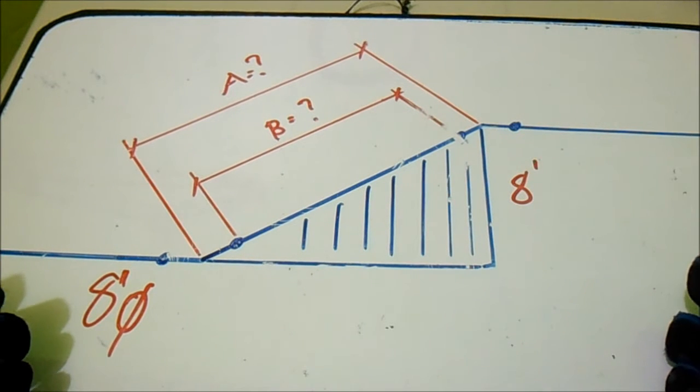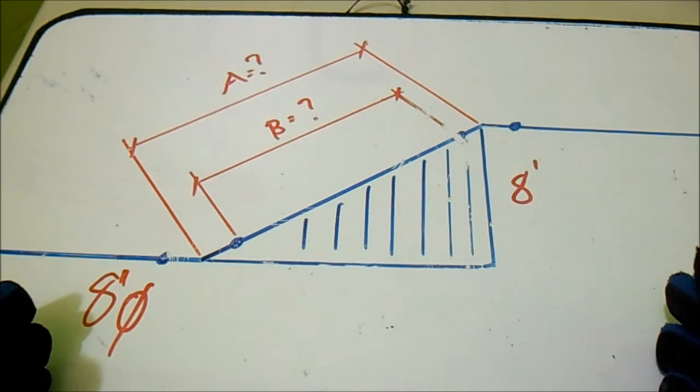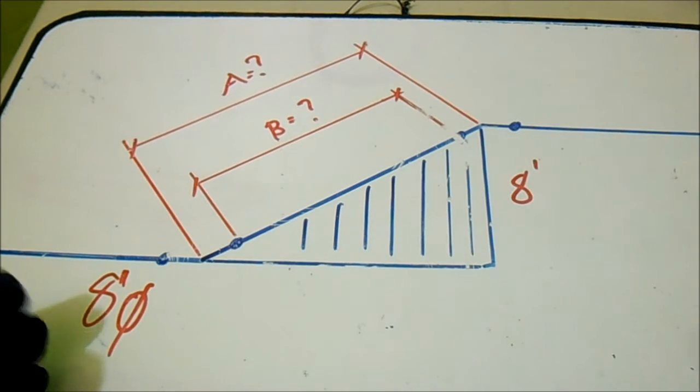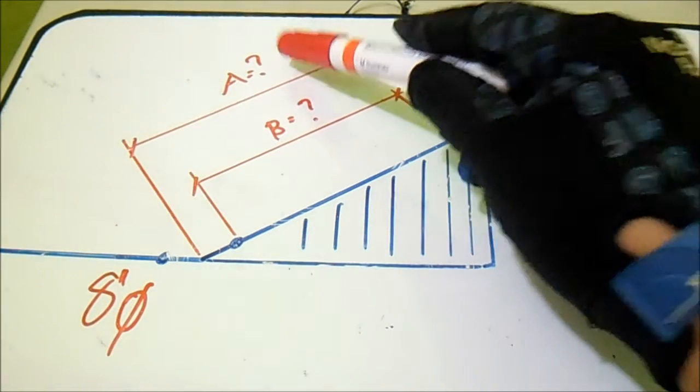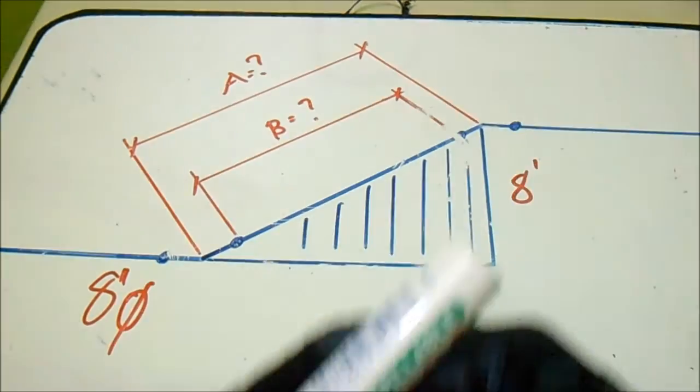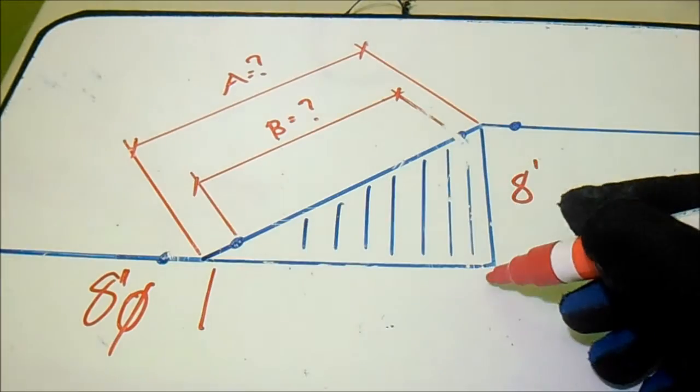Hello guys, welcome to Piping Welding and NDT channel. Let's compute letter A, letter B, and also this side. We will be using 1.414.